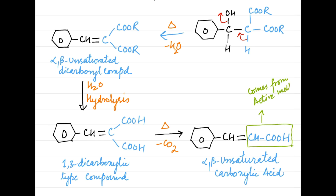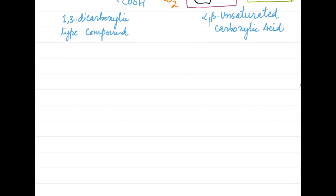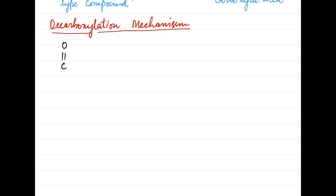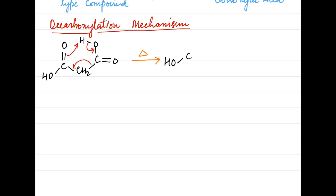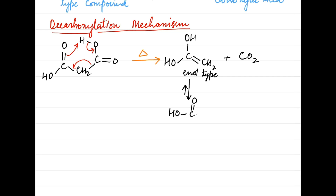One can easily observe that this part comes from the active methylene compound, whereas this part comes from the aldehyde. The mechanism of decarboxylation upon heating can be easily shown if we write the 1,3-dicarboxylic acid in cyclic form. Decarboxylation follows a concerted mechanism with a cyclic transition state, where the C-C bond breaks at the same time that the O-H and C=C pi bonds are formed. It happens all at once with no charged intermediates. An enol is formed as an intermediate, which then undergoes keto-enol tautomerism to give the carboxylic acid.